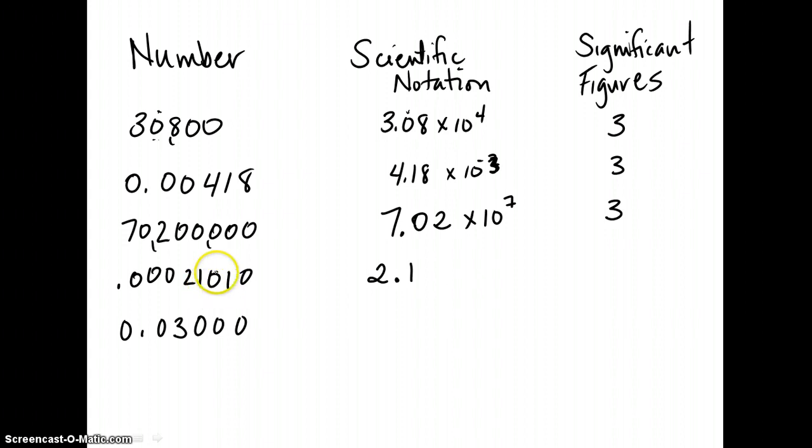We notice here, again, we have a zero between two integers. So that's going to be an important and significant number, and also this trailing zero because it's after a decimal point. If you have something, a zero that is after a number that is a non-zero and after the decimal point, it is considered significant.